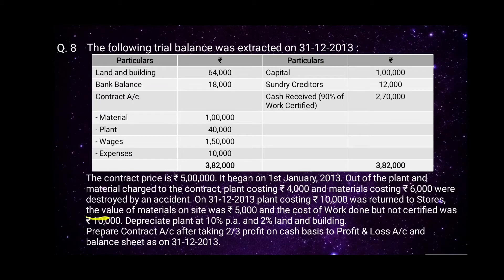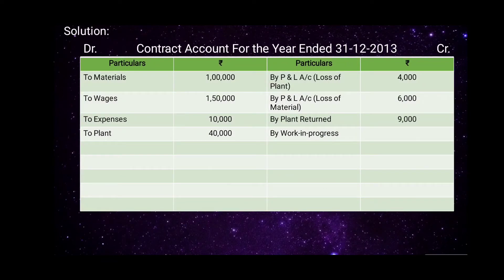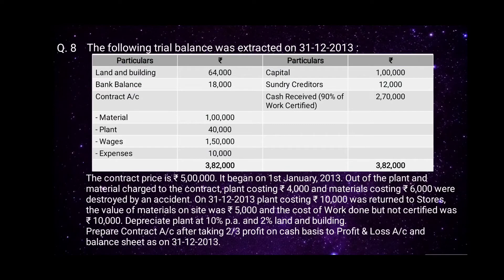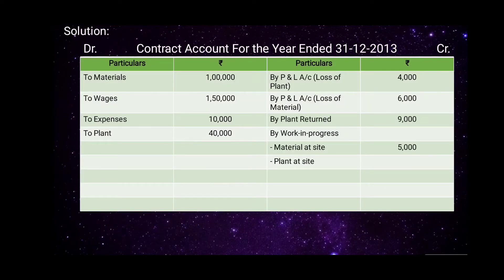The value of materials on site was rupees 5,000, recorded on the credit side under Work in Progress as 'Materials at Site', amount rupees 5,000. Plant amount from the trial balance is rupees 40,000, so we prepare Working Note 2 for calculation of plant at site, to be recorded on the credit side as 'Plant at Site'.